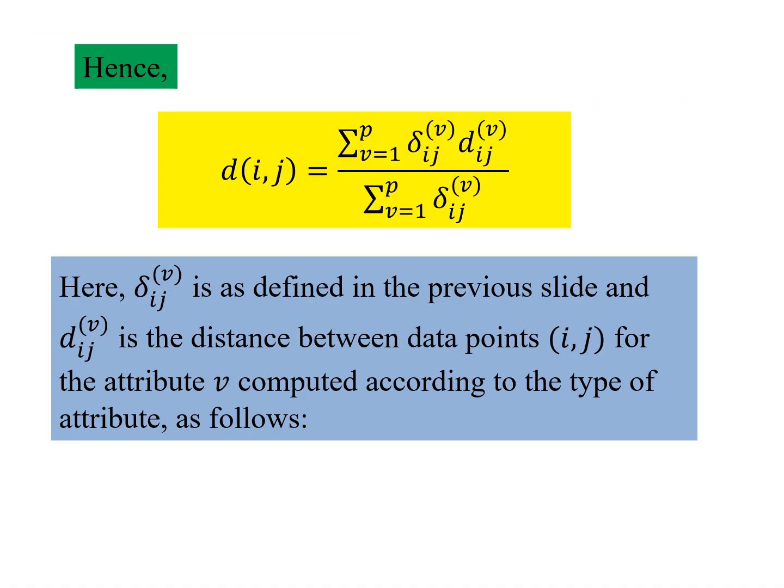So what is dij between the distance between data points i and j? It is the summation over all the attributes v from 1 to p, where p is the number of attributes in the data point. And delta ij v multiplied by the dij v, this divided by the summation of the deltas.